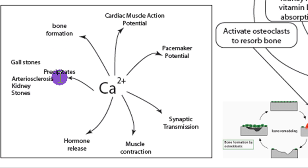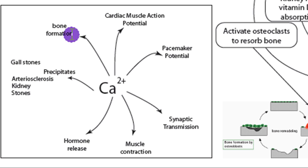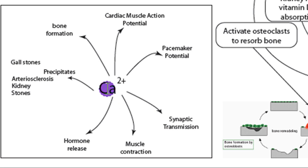While we started on bone, let's end on that too, because sometimes we'll form bone where we really don't want bone — as in the case of gallstones, arteriosclerosis (hardening of the arteries), and kidney stones. So regulating calcium is important because we have several functions that need it, but we also can't let it get so high that we form bone where we don't want it.